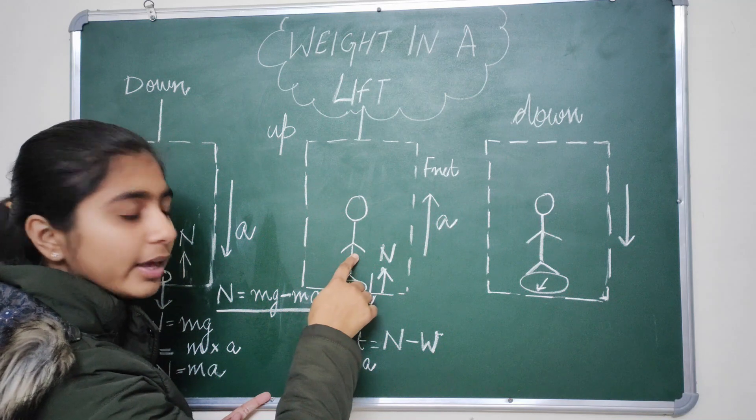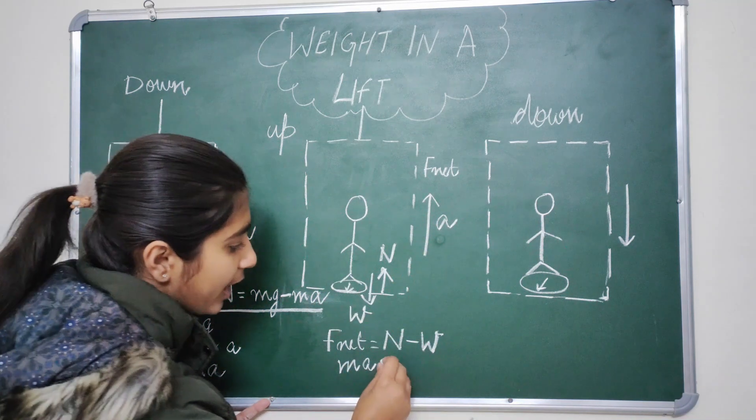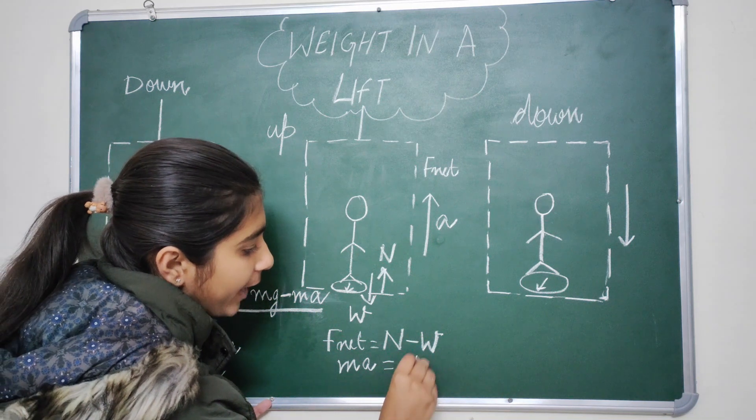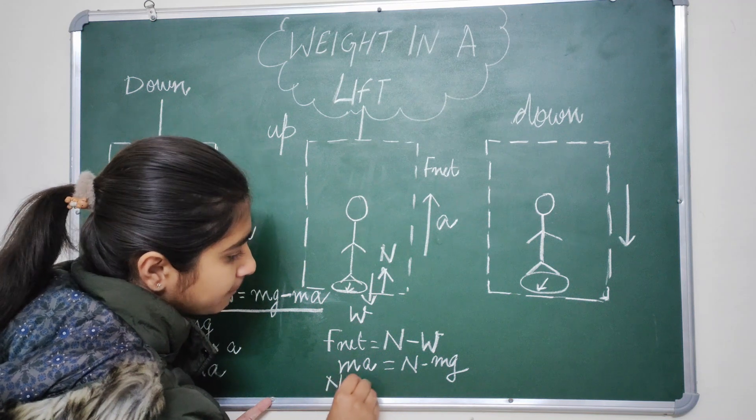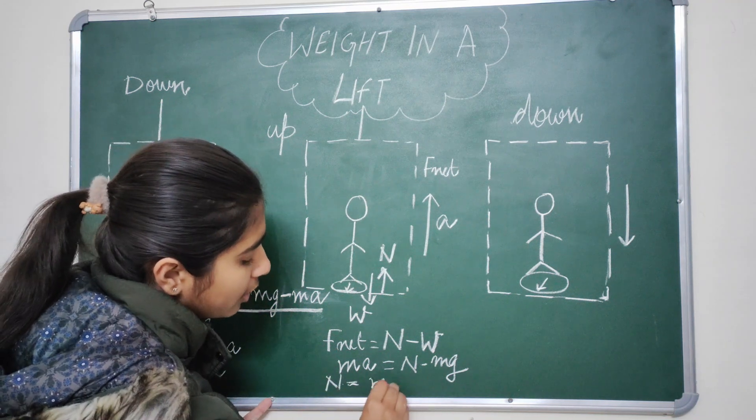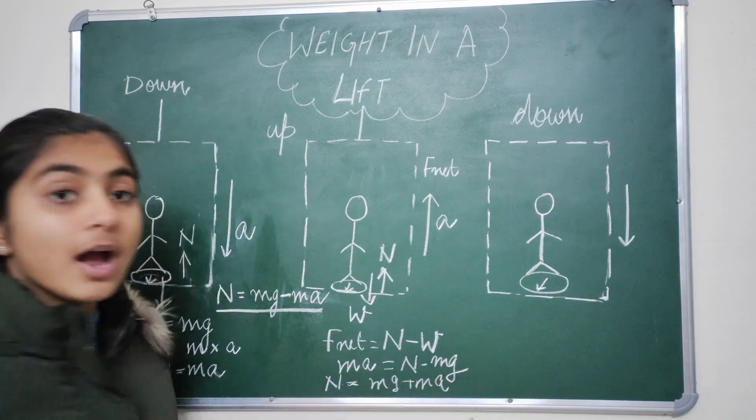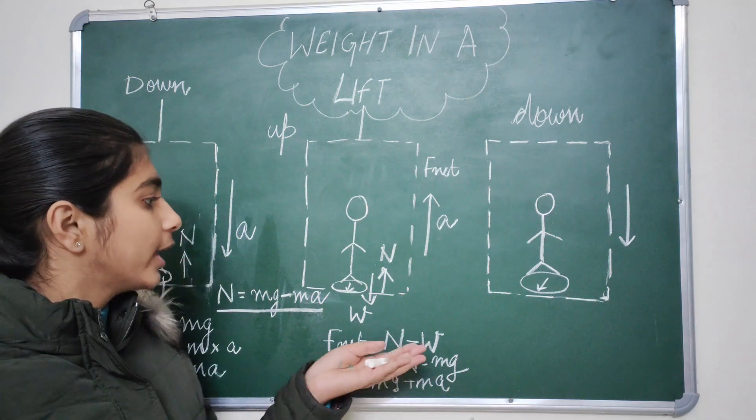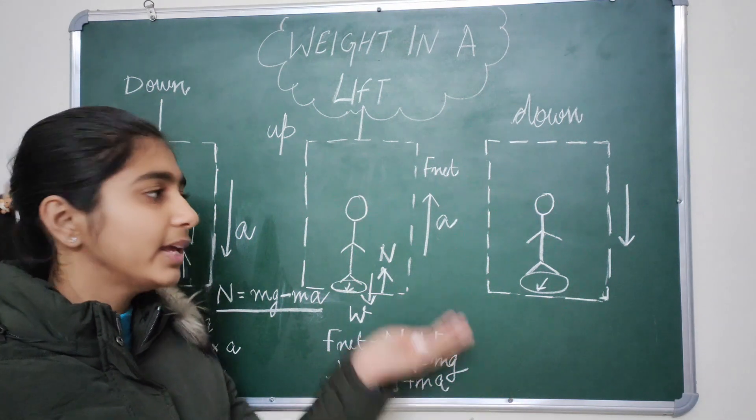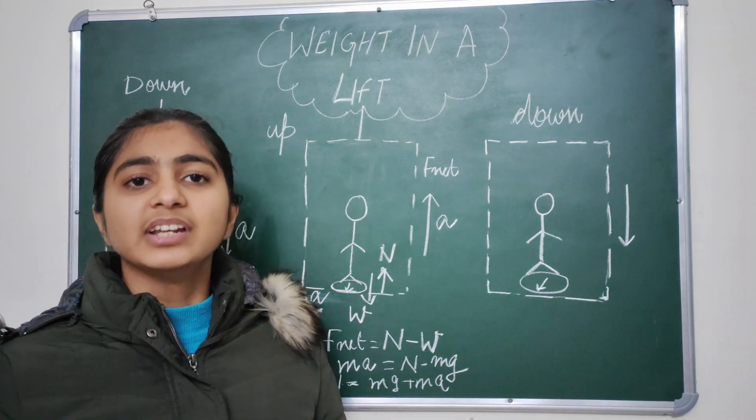N minus MG equals MA. So here you can see N can be written as MG plus MA. That is, whenever we travel upwards from ground floor to any fourth floor or third floor, we feel a sort of heaviness in our body.